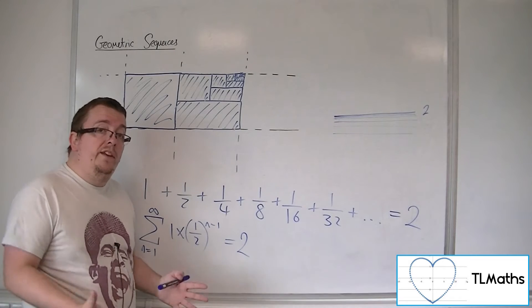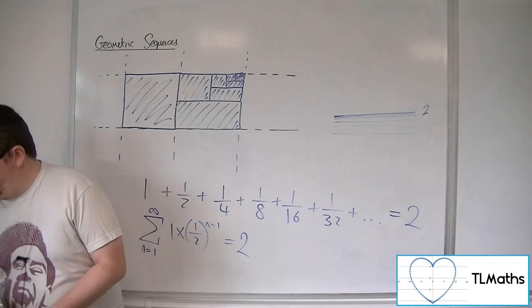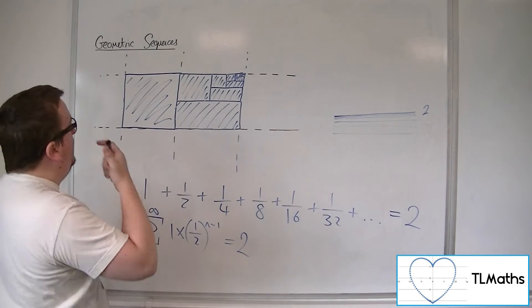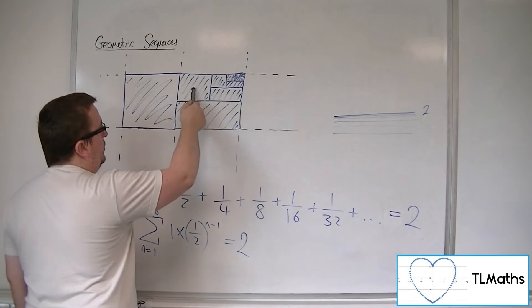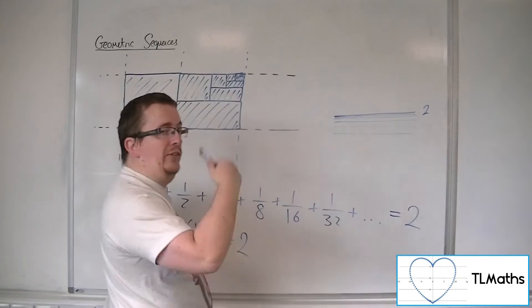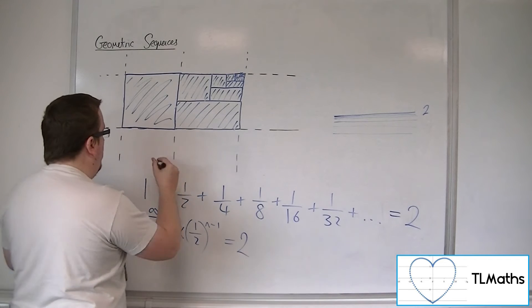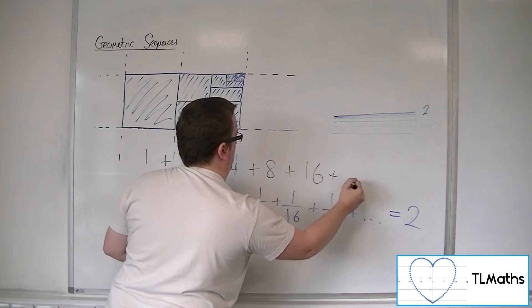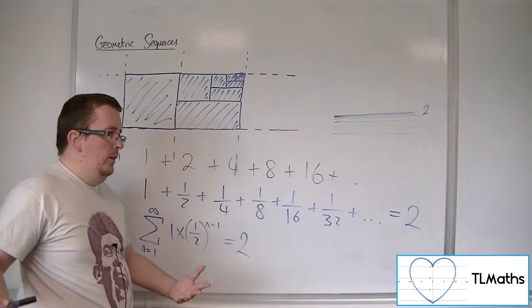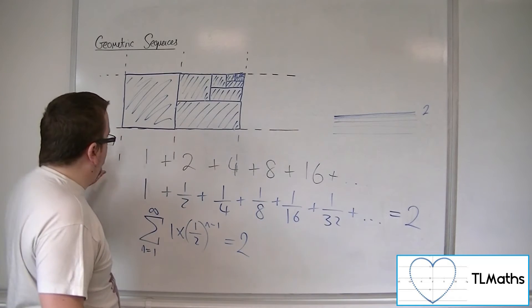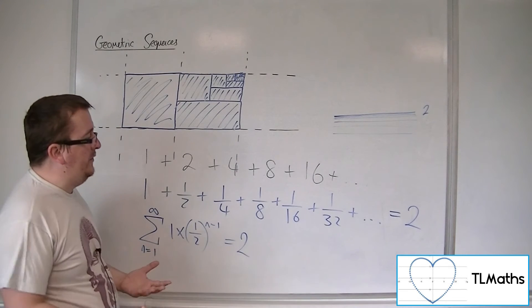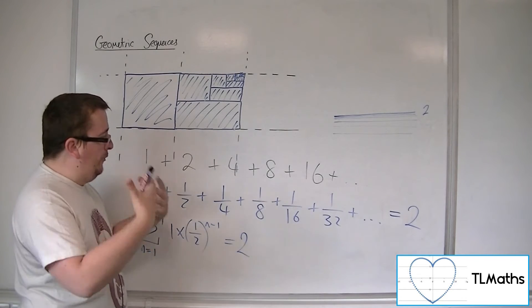Does a series have a sum to infinity, and what is it? What made sure that this was going to have a sum to infinity? Because 1 plus a half plus a quarter plus an eighth plus a sixteenth converges, but what about 1 plus 2 plus 4 plus 8 plus 16? Will this have a sum to infinity — will there be a value beyond which I can't get any further? No — I'm going to keep on adding on larger and larger amounts. So this geometric series does not have a sum to infinity. It's only going to work if we're adding on smaller and smaller pieces.